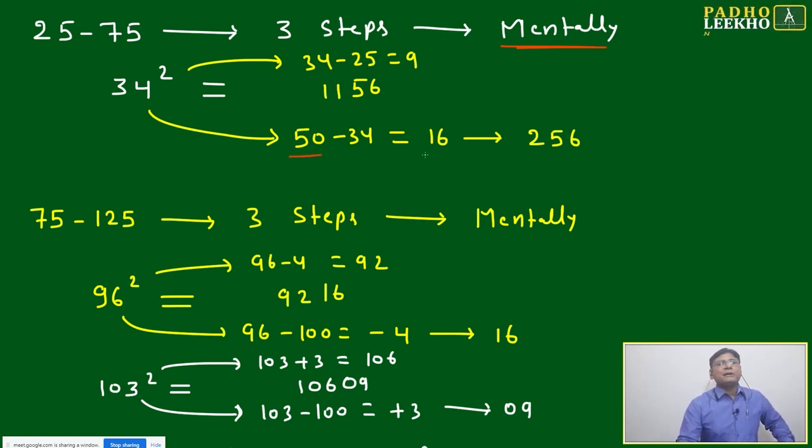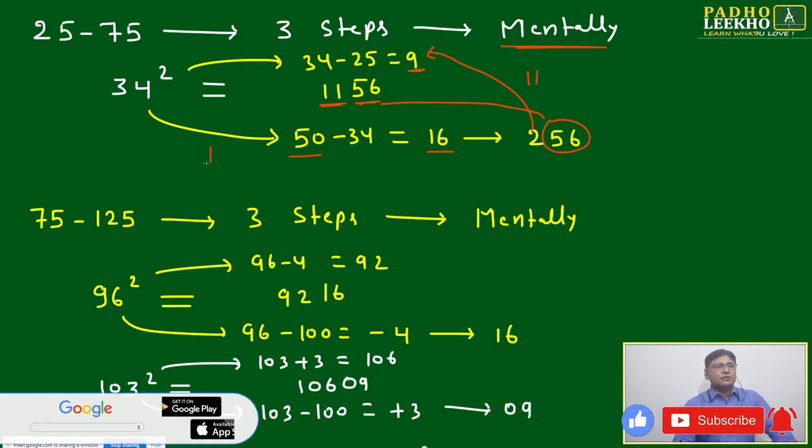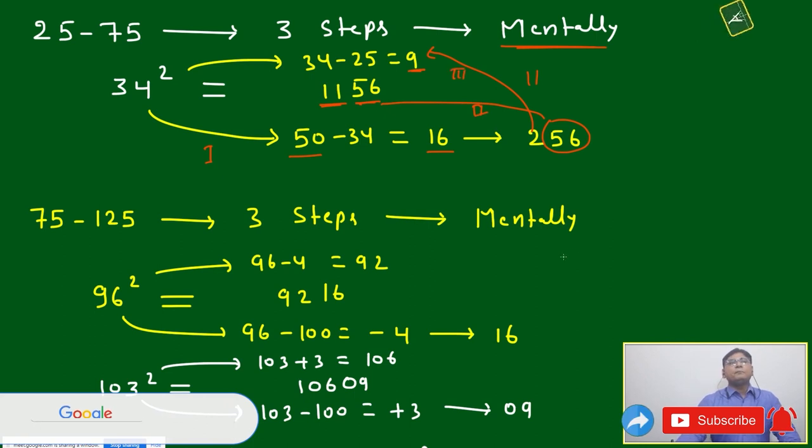For 34 square, what you have to do: 50 minus 34 is 16, it will become 256. This 56 last digit will come here. 34 minus 25 is 9. If any carry forward is there, you just add it: 9 plus 2 will be 11. This 11 will come here. 34 square is 1156. This is your step 1, this is your step 2, and this is your step 3. Three steps mentally.